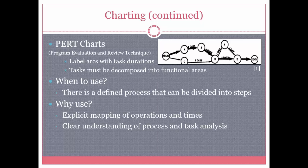PERT charts are Program Evaluation and Review Technique charts, where you label the arcs with task durations and the tasks must be decomposed into functional areas. Similar to a PERT chart, which can also be used in management, the different operation charts divide tasks into smaller elements in order to better visualize the overall process. You use charting when there is a defined process that can be divided into steps. It provides an explicit mapping of operations and times, giving a clear understanding of the process to perform a proper task analysis.